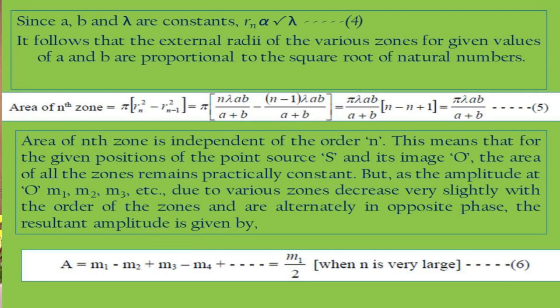Since A, B, and lambda are constants, Rn is proportional to the square root of the natural number n, so they behave like Fresnel's half period zones as discussed earlier. The area of the Nth half period zone equals pi·(Rn² − Rn-1²), which mathematically equals pi·lambda·AB/(A+B). So the area of the Nth zone is independent of order N — all half period zones have equal area.